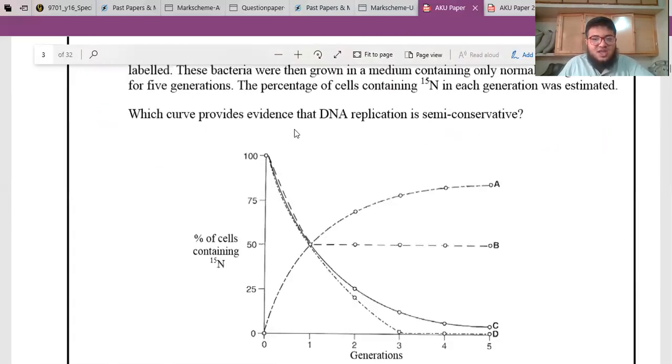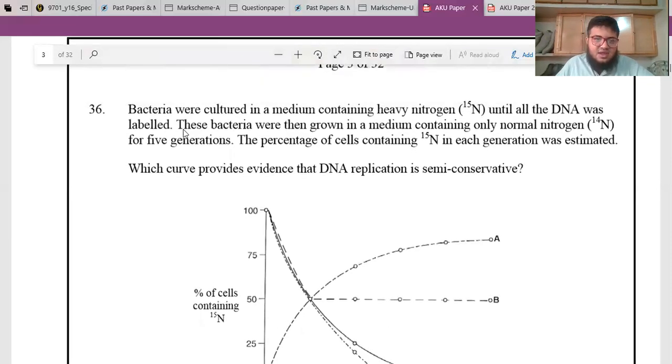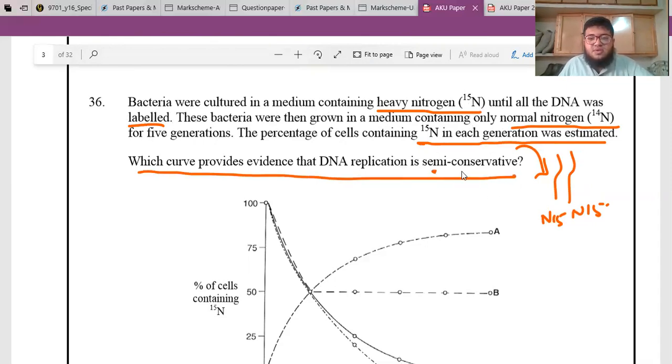This question is from past papers. Bacteria were cultured in a medium containing heavy nitrogen N-15 until all the DNA was labeled. The DNA strands are double stranded, and every strand has nitrogen-15. After being cultured, the DNA strands are completely labeled with nitrogen-15. Then these bacteria were grown in a medium containing only normal nitrogen N-14. They will replicate. The percentage of cells containing nitrogen-15 in each generation provides evidence of semi-conservative replication of DNA. What does semi-conservative mean? Each generation conserves one old strand and creates one new strand.